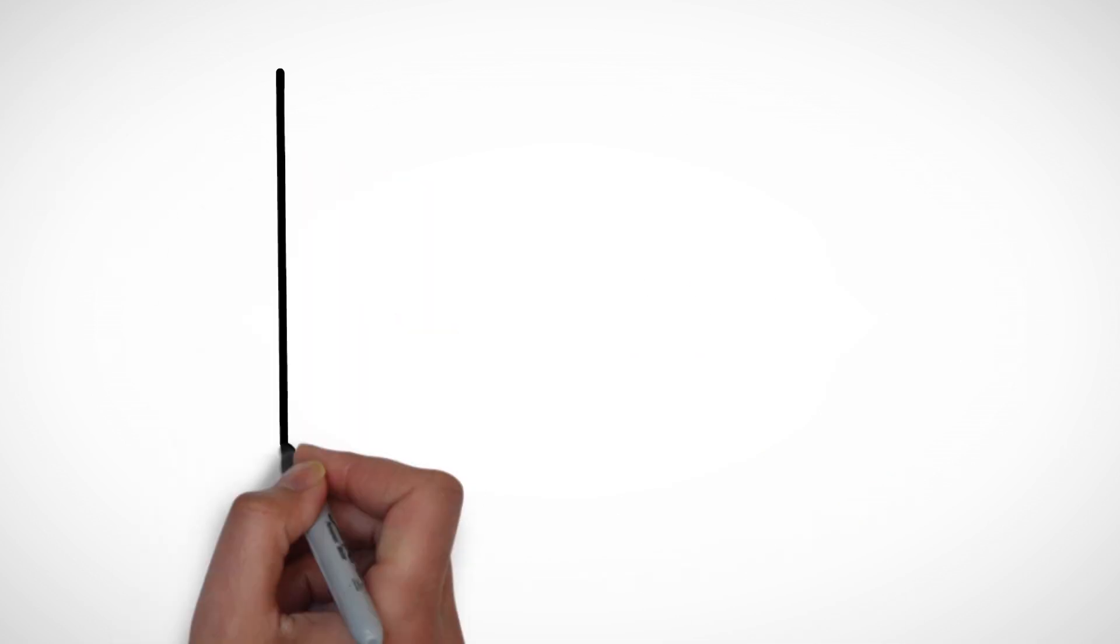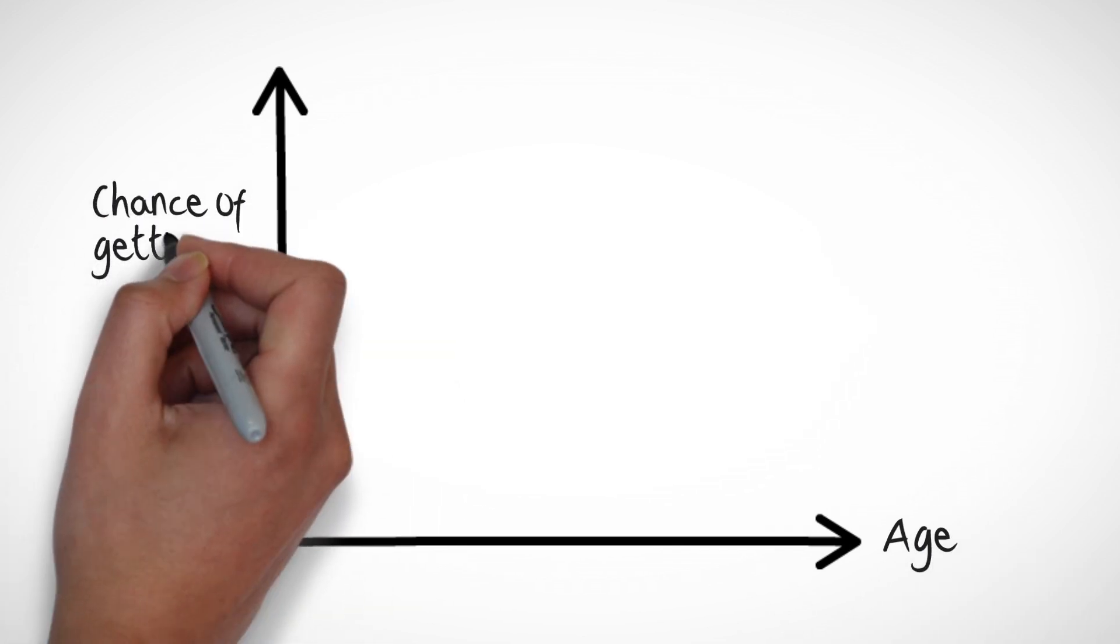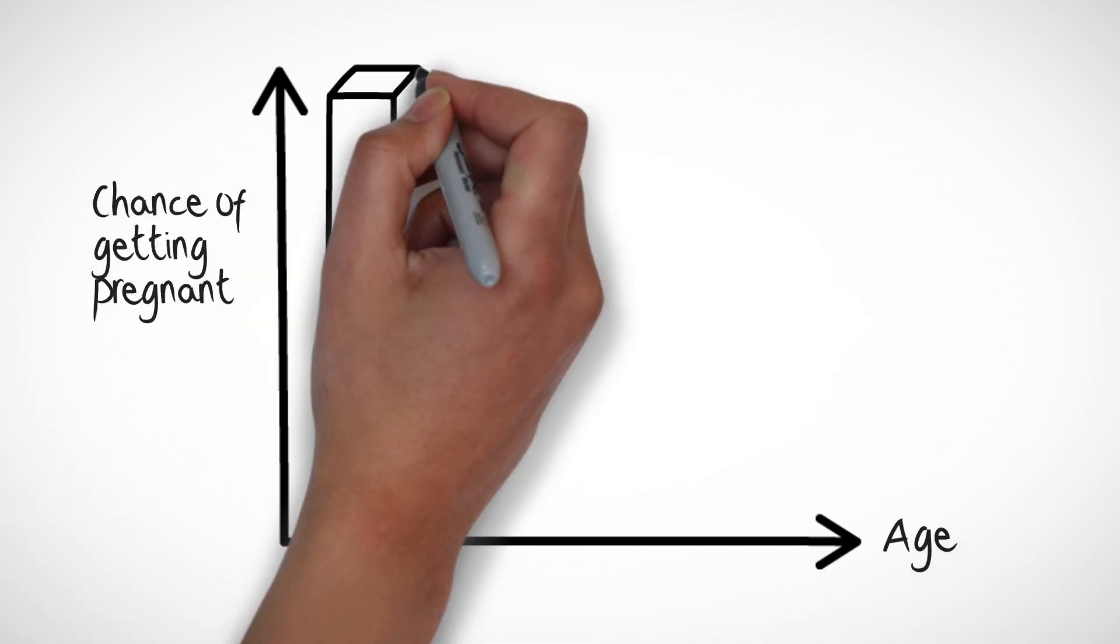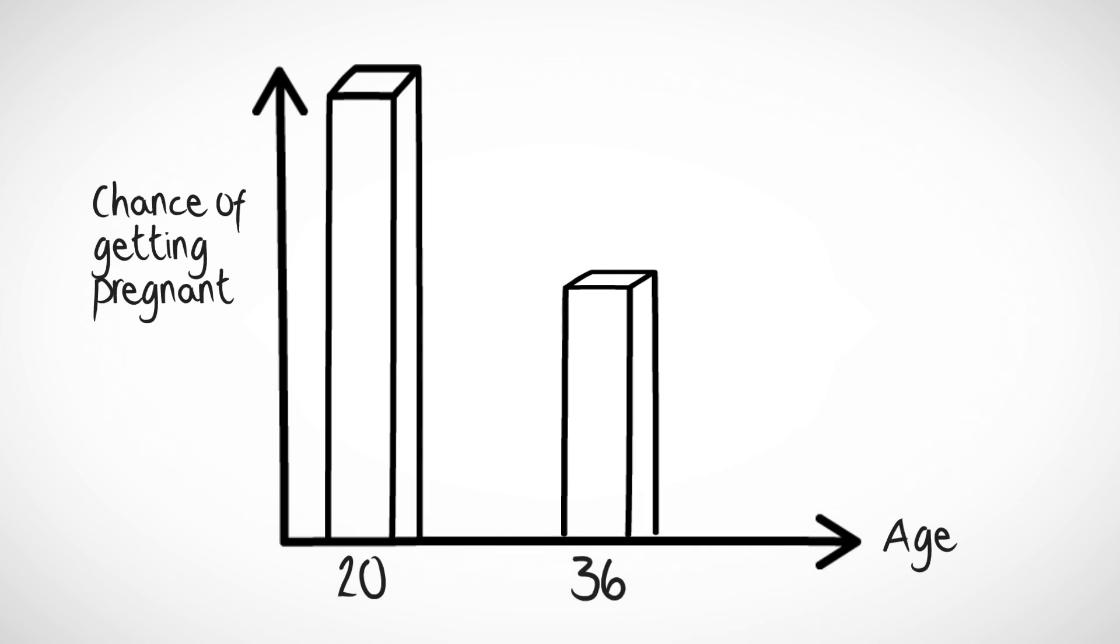Once you turn 36, your chance of conceiving naturally is about half what it was when you were 20. By the time you're 41, your chance of conceiving naturally each month is just 4%.